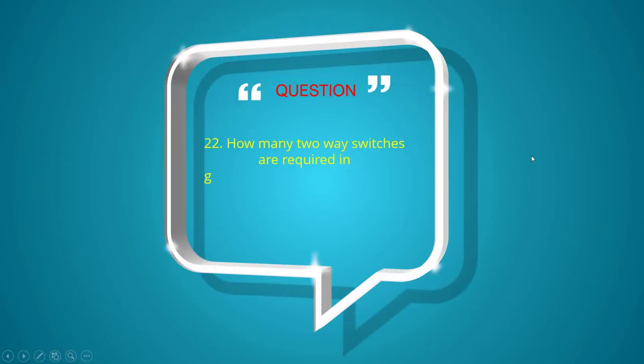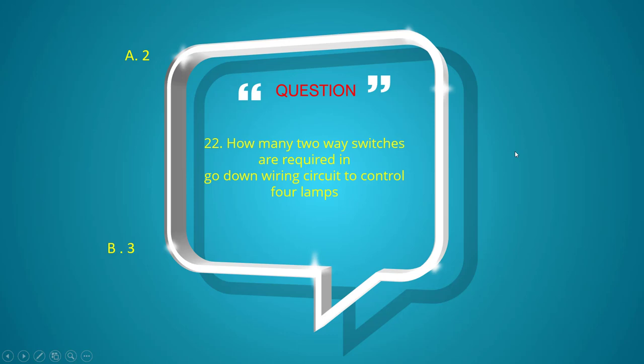How many two-way switches are required in godown wiring circuit to control four lamps? Options: two, three, four, five.